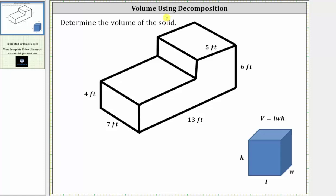We want to determine the volume of the given solid. To determine the volume, we will cut or decompose the solid into two right rectangular prisms or two boxes. We can determine the volume using the volume formula V equals length times width times height, which gives the volume of a right rectangular prism or a box as shown here.